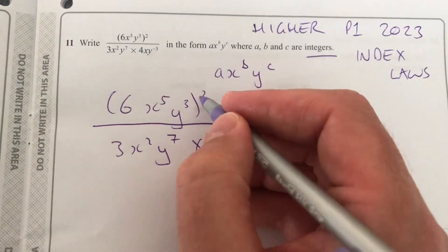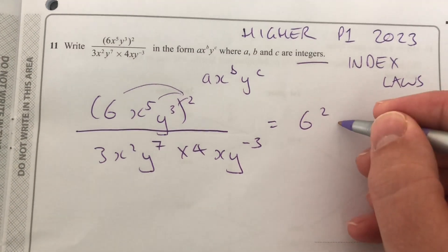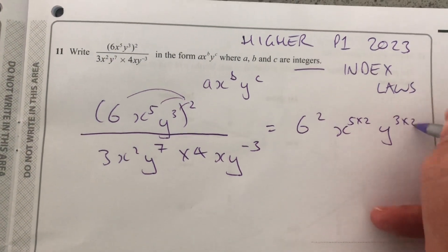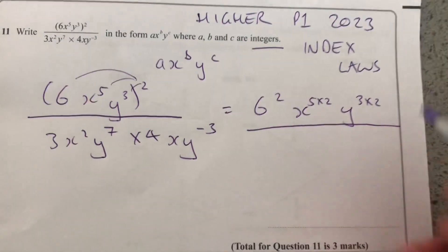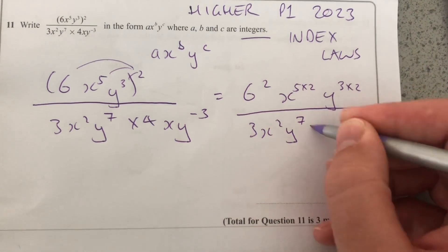So index laws, that squared term is going to apply to each of those. So it's going to be 6 squared X to the 5 times 2, Y to 3 times 2. Because when you raise a power to another power, you multiply them. And then in the denominator, you can leave it as it was for now.